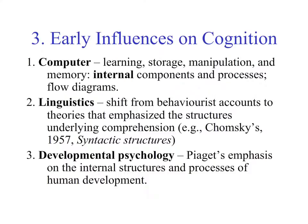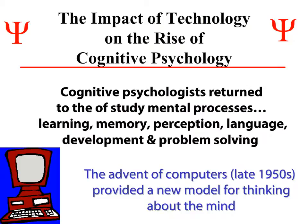Today we've advanced our analogy from just the physical computer to the types of software on that computer. In linguistics, the shift from behaviorist theories to those that emphasize structure and underlying comprehension was driven by Chomsky's 1957 book 'Syntactic Structures.' In developmental psychology, Piaget emphasized cognitive structures and internal processes with respect to human development. The advent of the computer in the late 1950s provided a new model for thinking about the mind and how it operated.